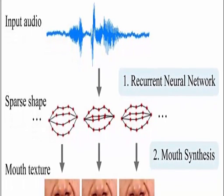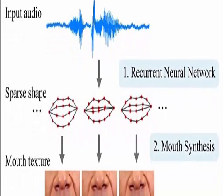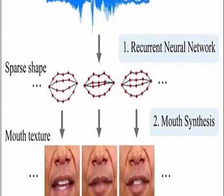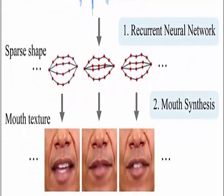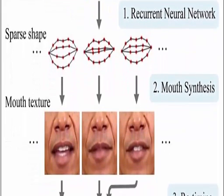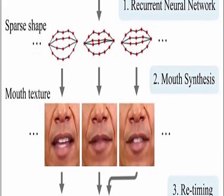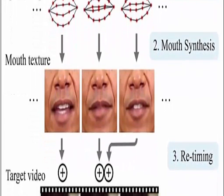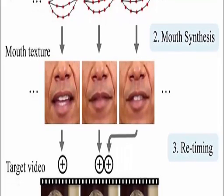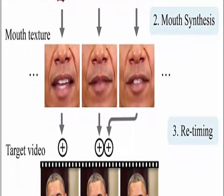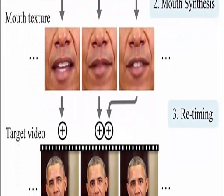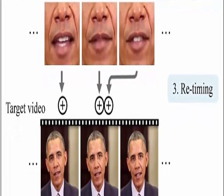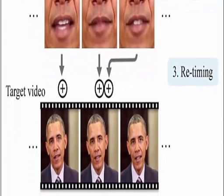Researchers have developed new algorithms that can turn audio clips into realistic, lip-synced videos of a person seeming to say those words. The team generated highly realistic videos of former President Barack Obama talking about terrorism, fatherhood, job creation, and other topics using audio clips, weekly video addresses, and even clips from when he attended Harvard Law School that were originally on a different topic.